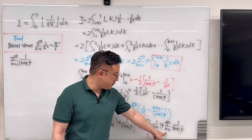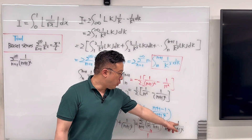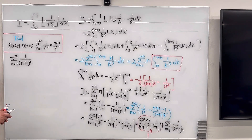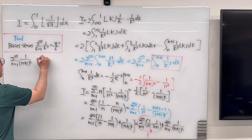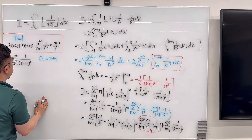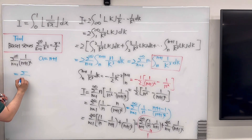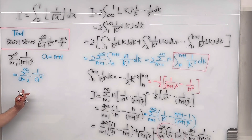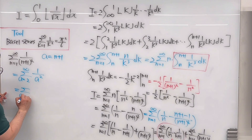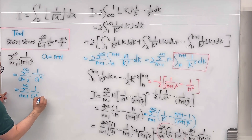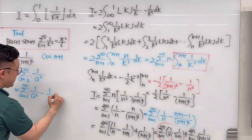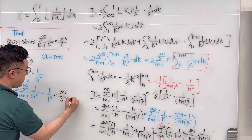Now we evaluate the second summation: the summation from n equals 1 to infinity of 1 over (n+1) squared. Let a equal n plus 1, so this becomes the summation from a equals 2 to infinity of 1 over a squared. This equals the summation from a equals 1 to infinity of 1 over a squared, minus 1 over 1 squared. Using the Basel series, this equals pi squared over 6 minus 1.